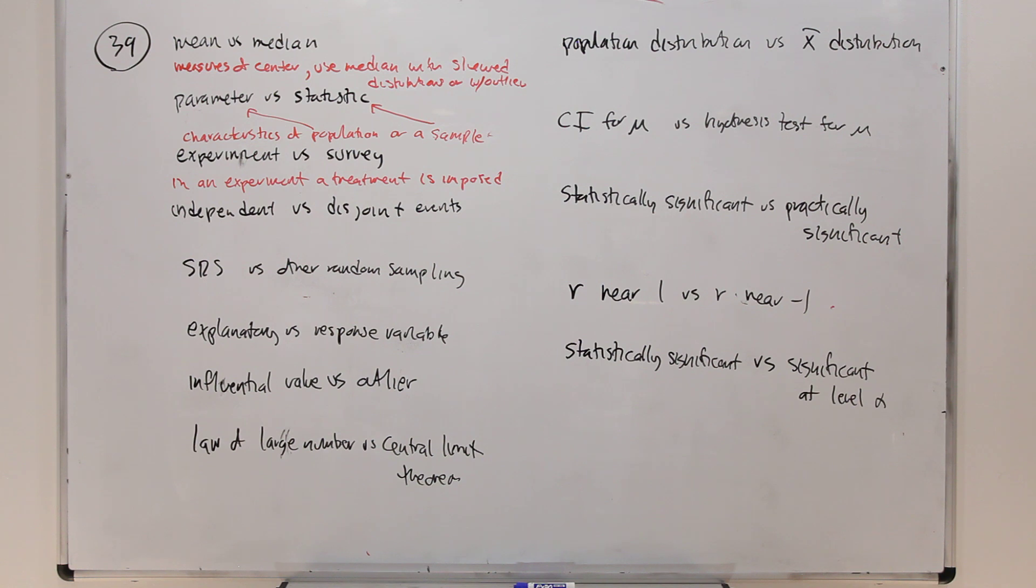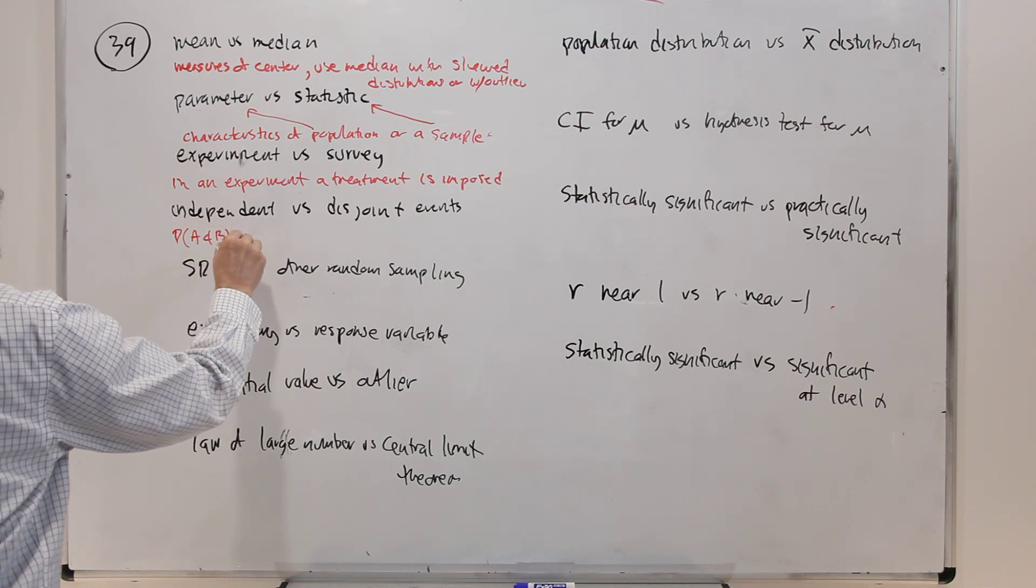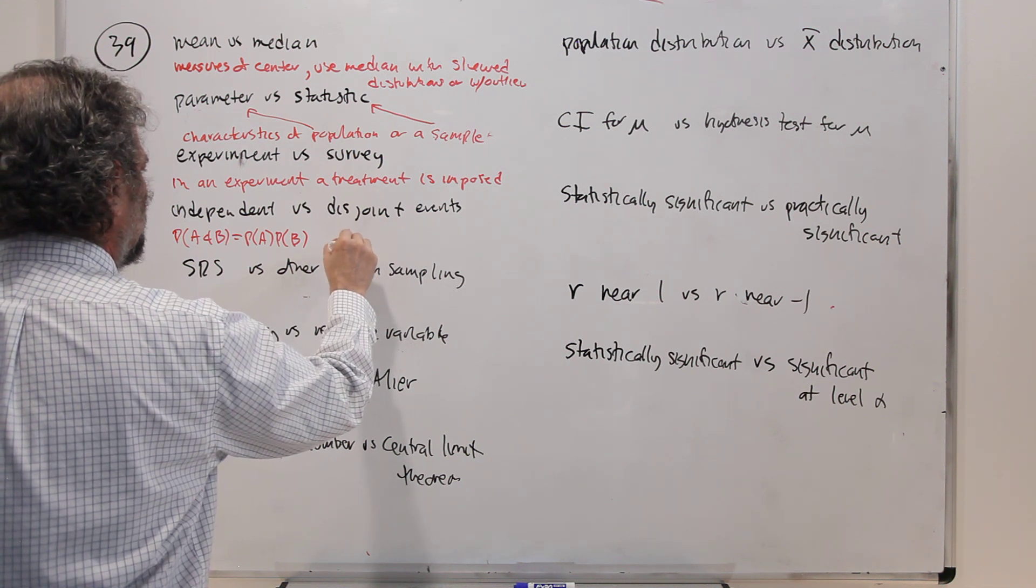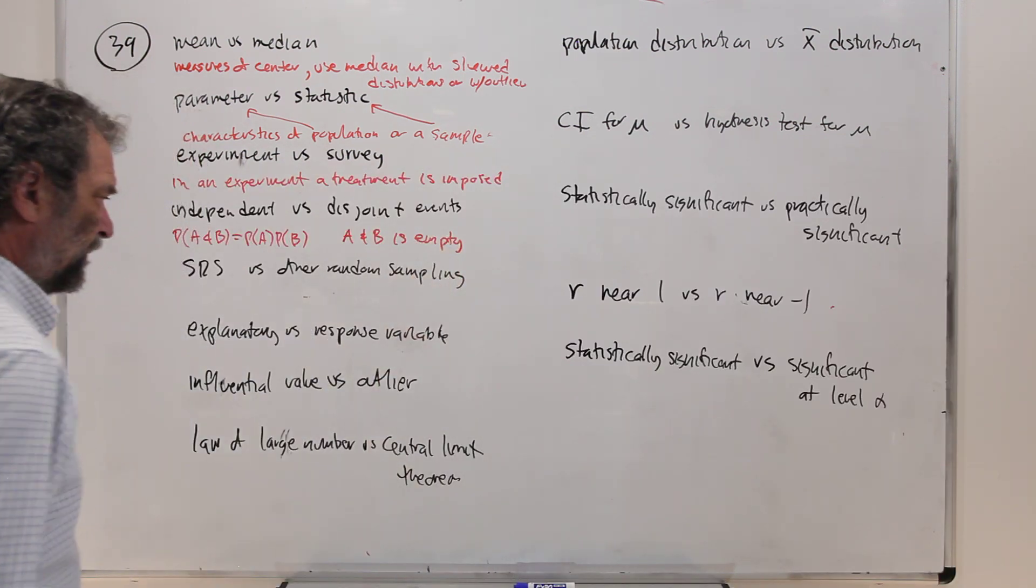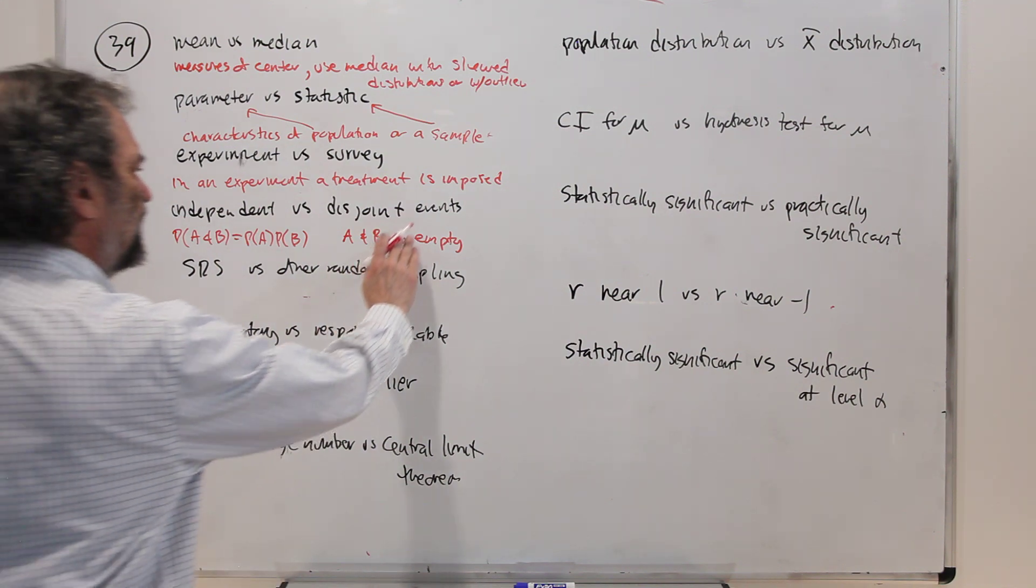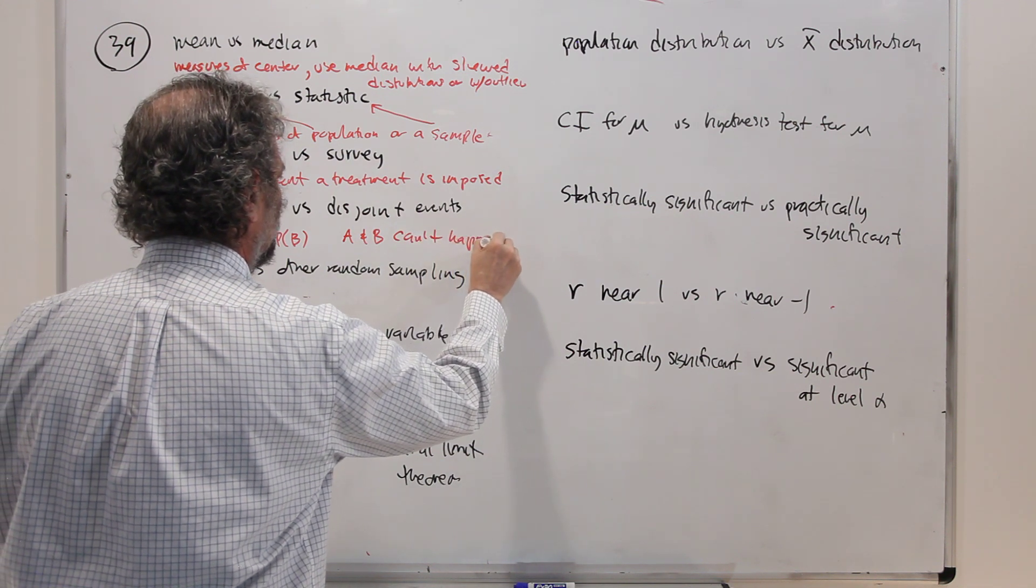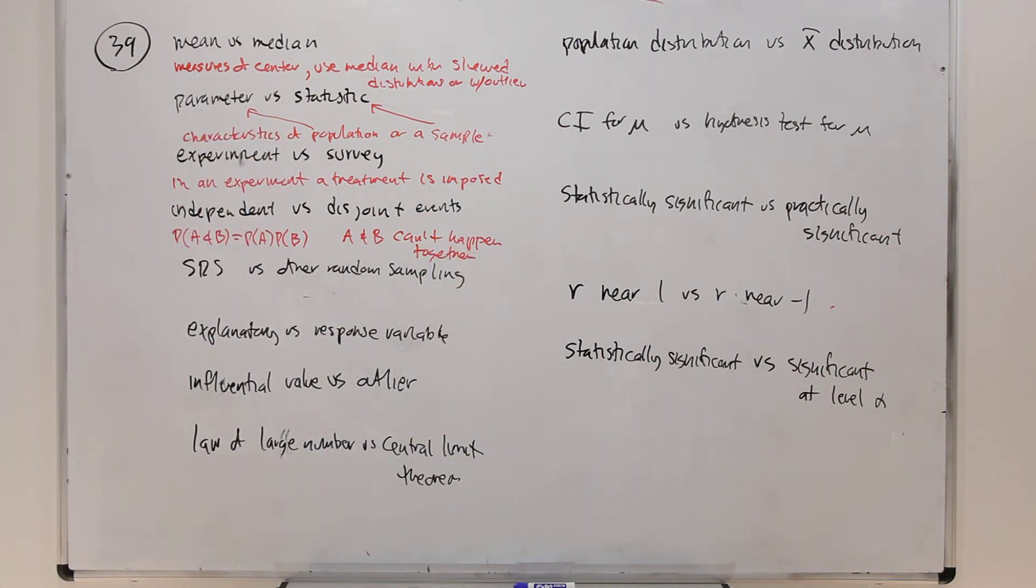Independent versus disjoint events. Independent says probability A and B is probability A times probability B. And disjoint says that A and B is empty, which is kind of weird. So A and B can't happen together. So if A is getting heads when you toss a coin and B is tails, then A and B would be disjoint. Disjoint events aren't independent. Independent events aren't disjoint. So they don't share any characteristics. So you have to be careful what you do.